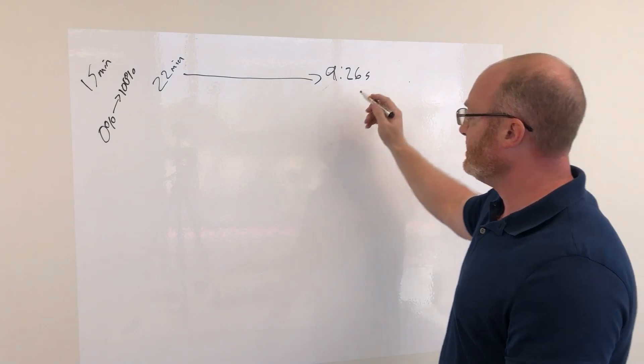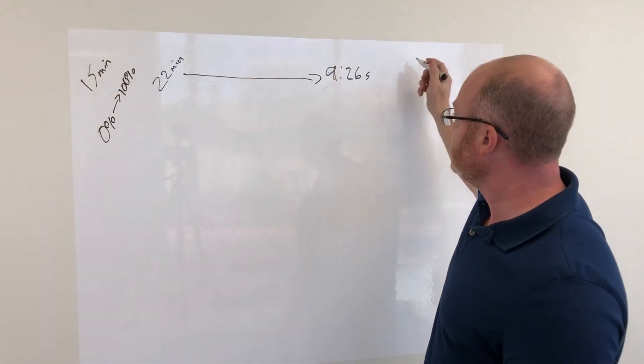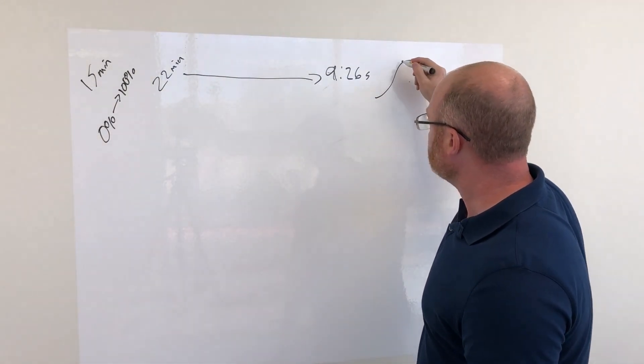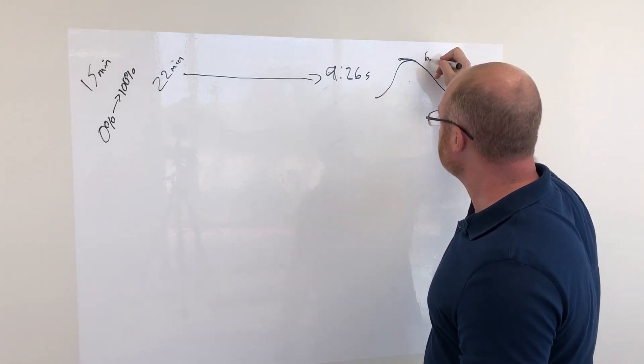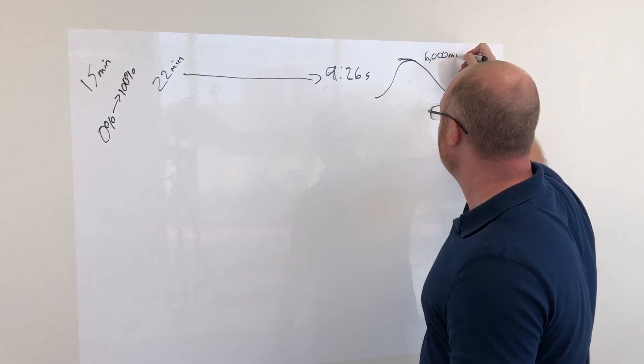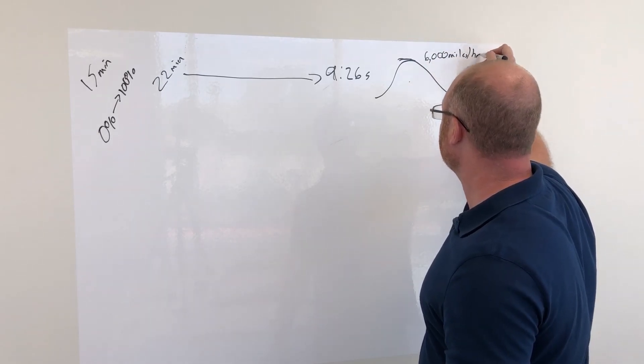When you start thinking about what this means, that means at the peak, right at that peak point when we're charging the vehicle, we're hitting something above 6,000 miles per hour of charge time.